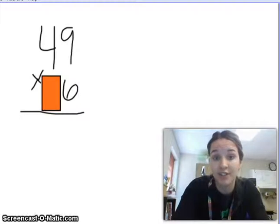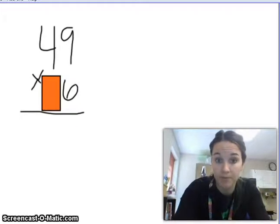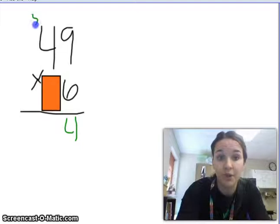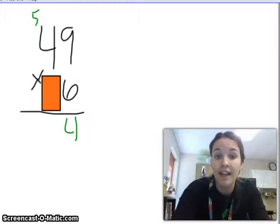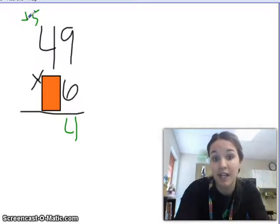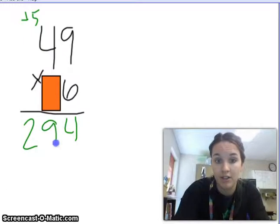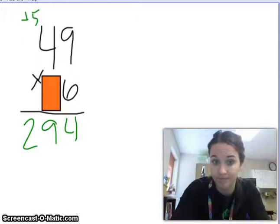6 and 9 is 54. I'm going to keep my 4 ones, regroup my 5 tens. Then, 4 tens times 6 would give me 24 tens. Plus 5 more would give me 29 tens. 29 tens is the same as 290. I already did my ones. I don't need to worry about them.